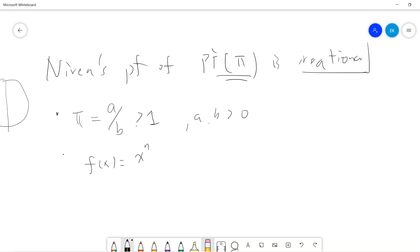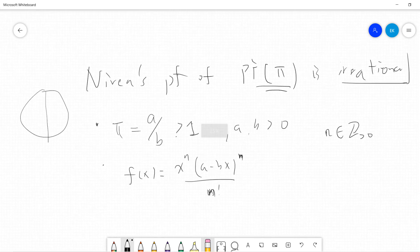So let's say f(x) is x to the power n. Let's take n as a positive integer. Let f(x) be x to the power n times (a minus bx) to the power n, divided by n factorial. So let's consider this arbitrary function f(x), which is parametrized by integer n.